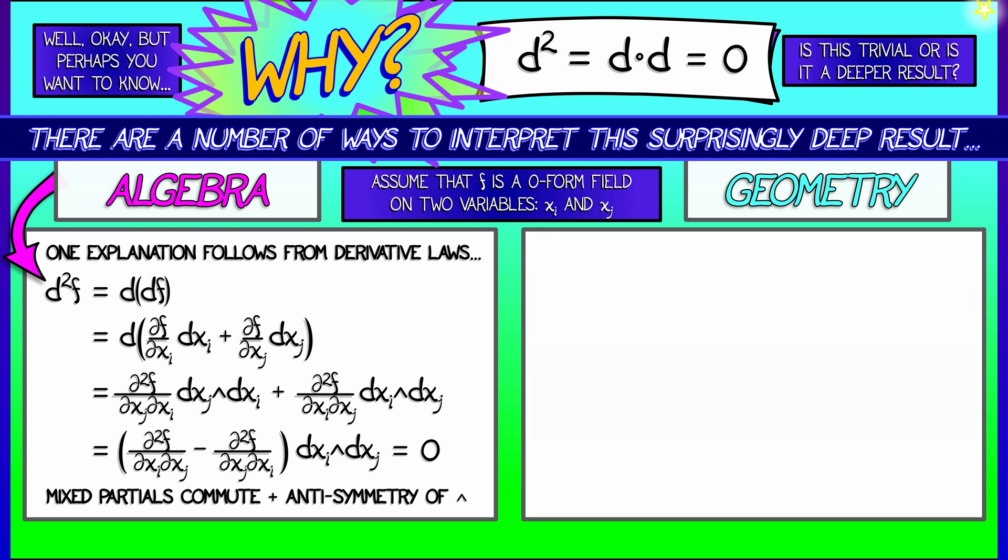Well, let's think in terms of the geometry of this operator. Let's think maybe in terms of orientations. Here's an idea. If you think about dxi, it has an implicit orientation built into it. One forms measure oriented projected length.